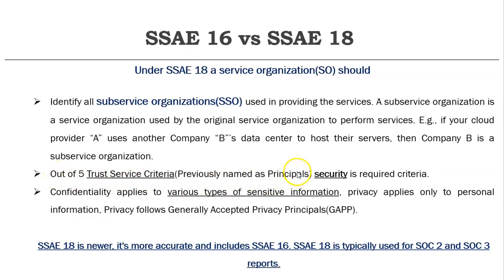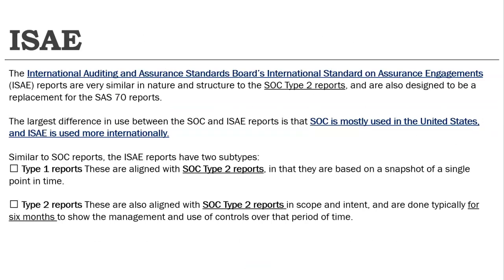Also under SSAE 18, the five trust principles are renamed as Trust Service Criteria — TSC. Security is a required criterion; any SOC 2 or SOC 3 report must include security. Out of five criteria, any two or three can be implemented — but security must be one of them. Also note: confidentiality applies to various types of sensitive information, whereas privacy applies only to personal information and follows GAPP principles.